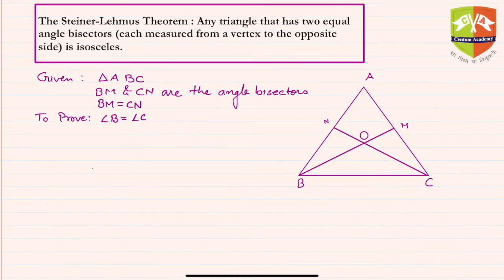Hello and welcome to another session on Gems of Geometry. In this session, we are going to discuss the Steiner-Lehmus theorem. The Steiner-Lehmus theorem suggests that any triangle that has two equal angle bisectors is isosceles.